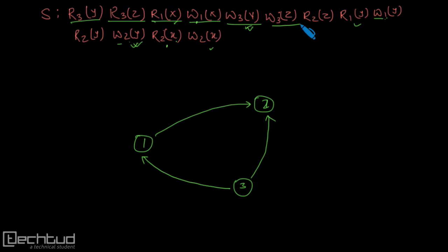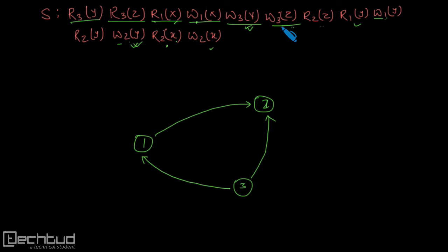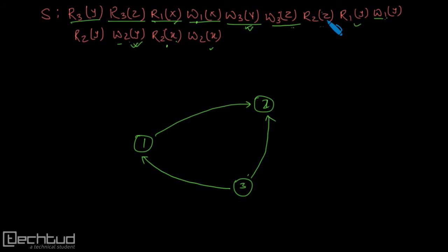Now let us talk about w3z on z. These two operations are conflicting — same variable, different transaction, at least one is a write. So from 3 to 2 I need to draw an edge, but 3 to 2 I already have. On z we do not have any further operation, so this is done.